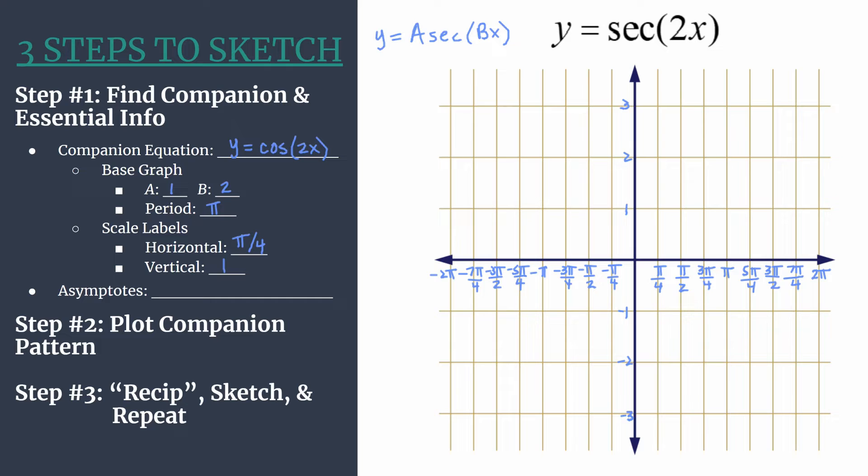To get those asymptotes, all we have to do is take our horizontal transformations, or the inputs of our secant function, so 2x, and set that equal to our original zeros, or x-intercepts of the cosine function. So that's at π over 2 plus πk.